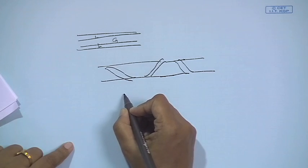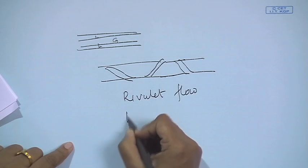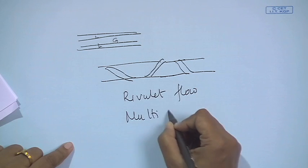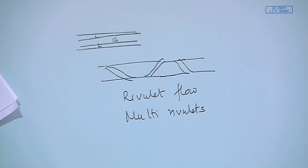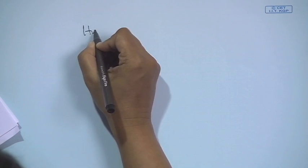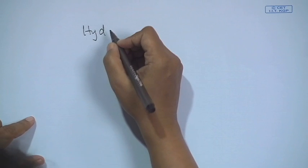At higher velocities or for higher wettability, instead of a single rivulet flow we might come across multiple rivulets — multi-rivulet flow. This is not something very common for hydrophobic pipes. I would just like to now jot down the flow patterns we get for hydrophobic and hydrophilic cases as a summary.